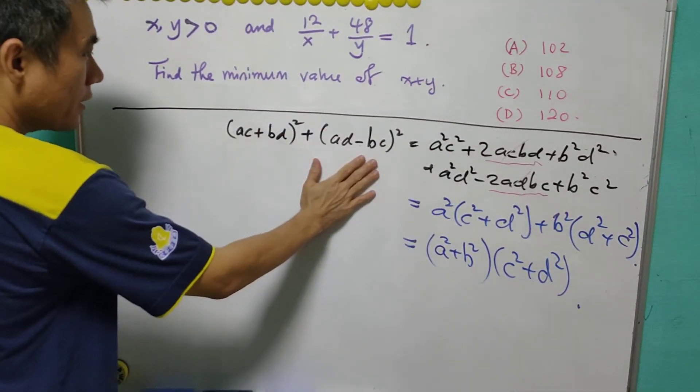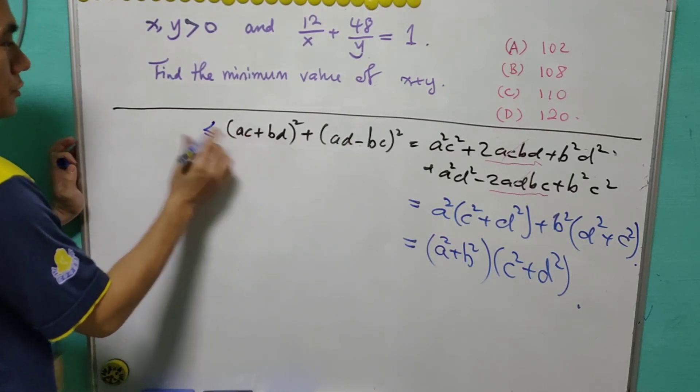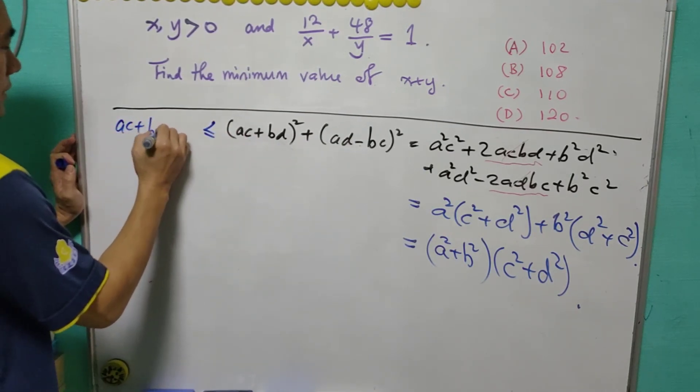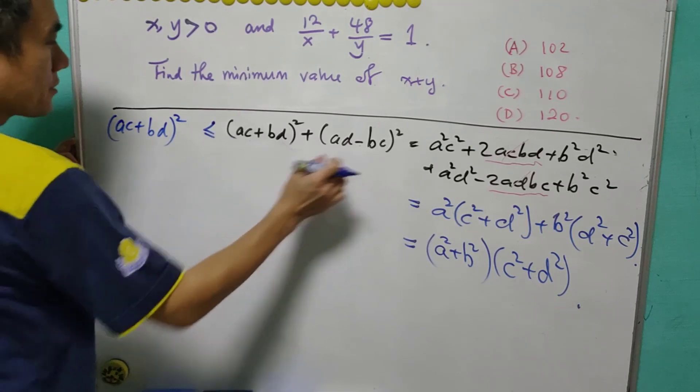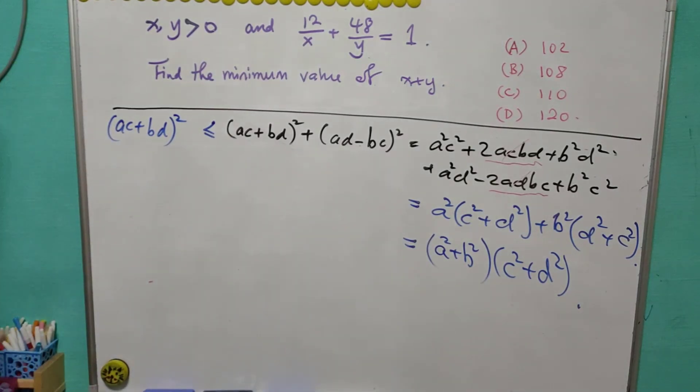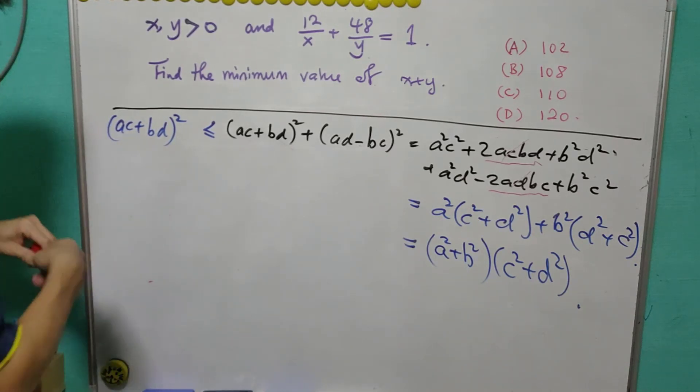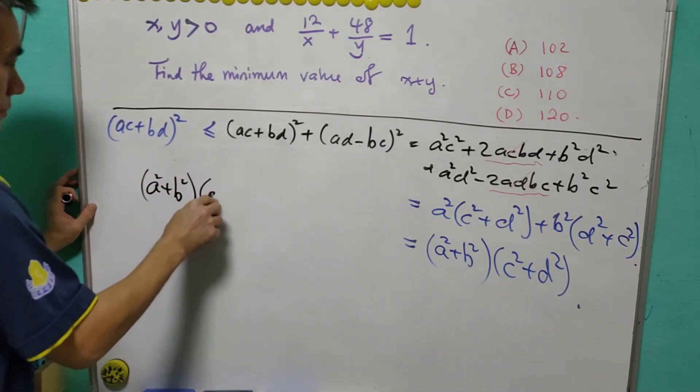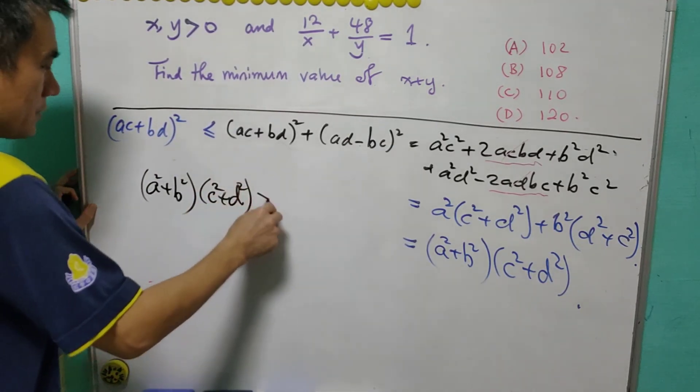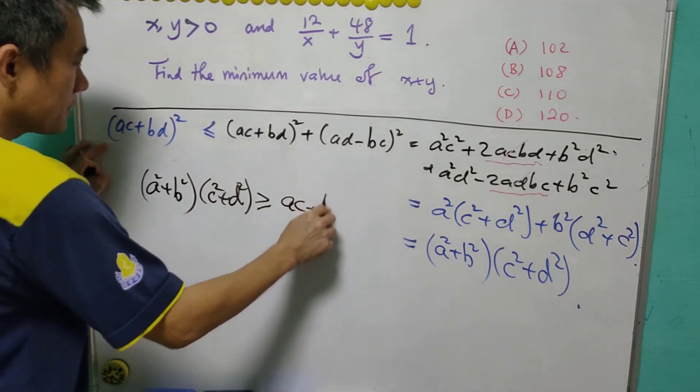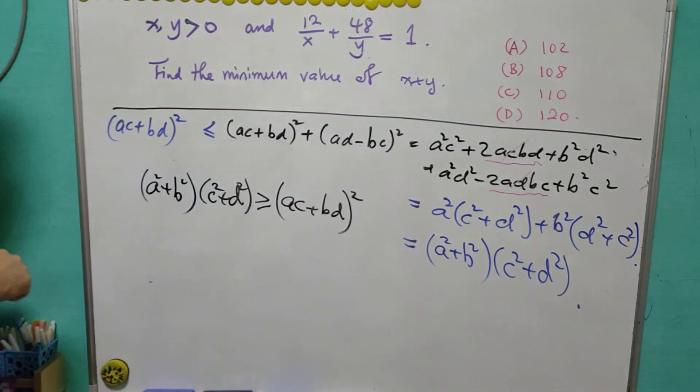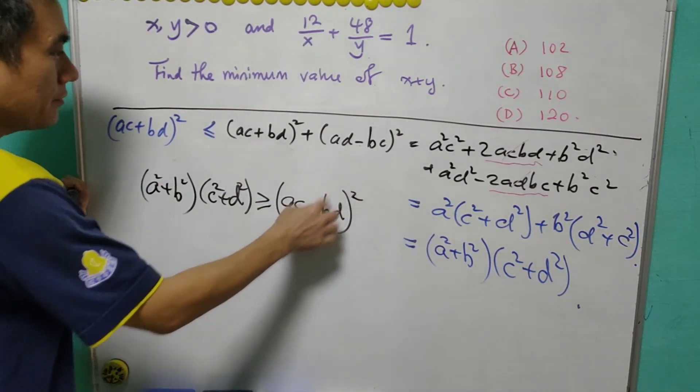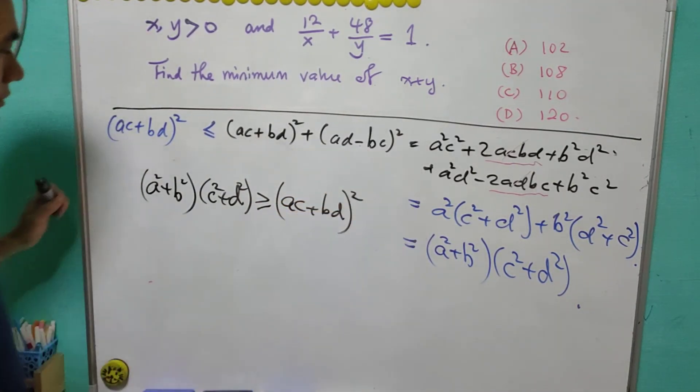This is sum of two squares. Then we know that it must be greater than or equal to (ac + bd)² because this is non-negative. So this is in fact the proof of Cauchy inequality for two terms. That is (a² + b²)(c² + d²) ≥ (ac + bd)². And the equality holds if and only if ad - bc = 0.